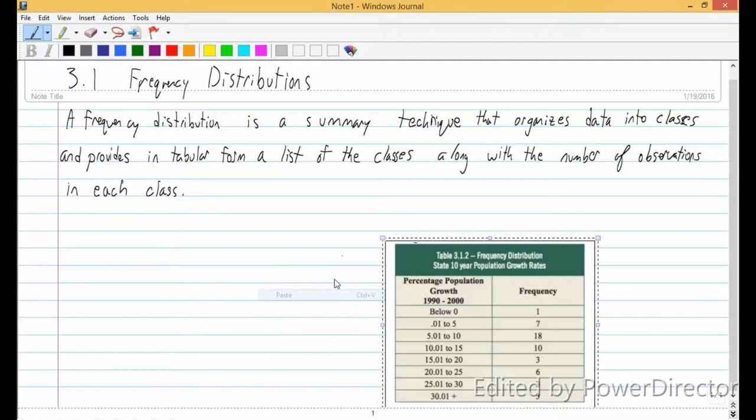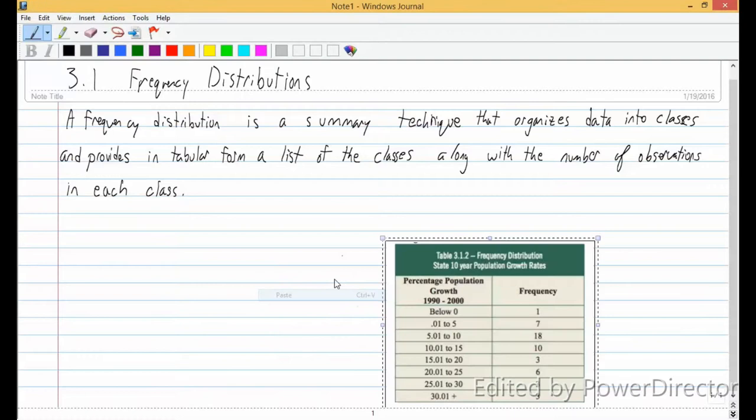This frequency distribution, you don't have to copy it down, it's in your book. This frequency distribution says state 10-year population growth rate.